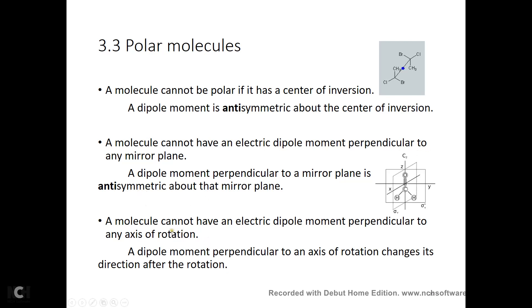Same argument here. A molecule cannot have an electric dipole moment perpendicular to any axis of rotation — except for C1. C1 is a rotation by 360 degrees. So for any other rotation: if you do a rotation and the electric dipole moment is perpendicular to that rotation axis, the direction of the dipole moment will change. At the same time, the same kind of atoms appear in the same positions in the molecule after the rotation, so its dipole moment should not change. So it should change, and yet it should not change. The only possible explanation is that this dipole moment is zero.